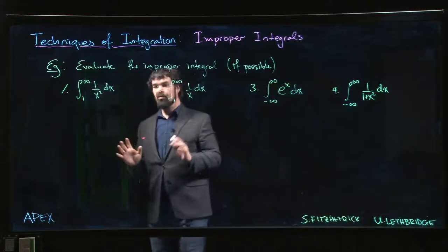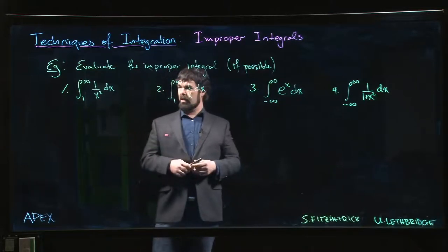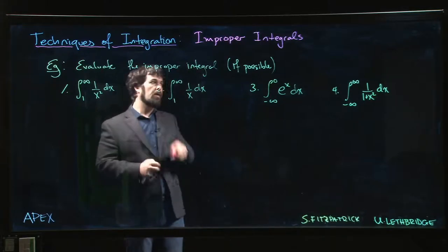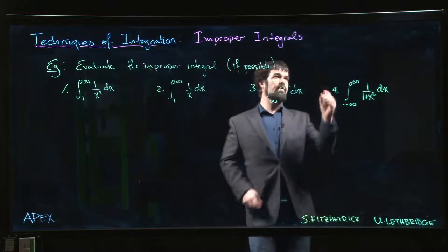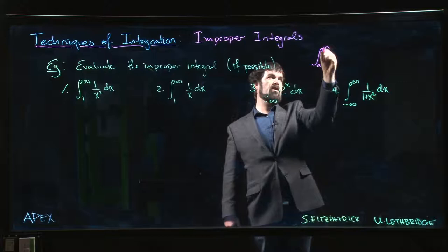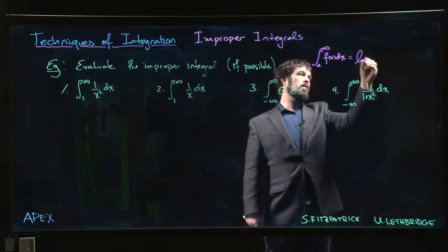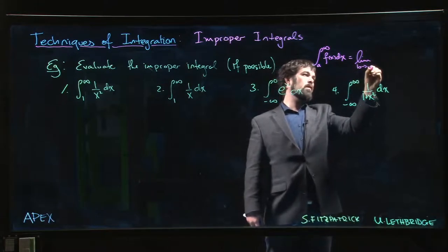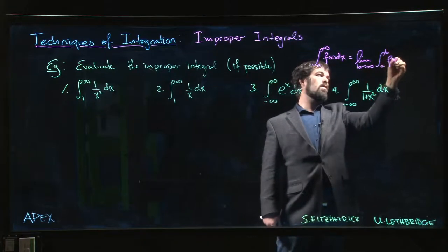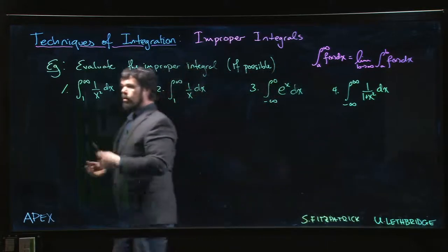Let's look at some improper integrals where we can actually evaluate things directly. With an integral like this, the way you define an integral of the form from a to infinity is: this is the limit as b goes to infinity of the integral from a to b of f(x) dx, provided the limit exists.